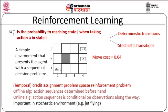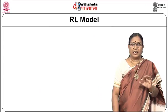The credit assignment problem is a sparse reinforcement problem. In an offline algorithm, action sequences are determined beforehand. In an online algorithm, the action sequence is conditional on the observations seen along the way — it is a dynamic problem. This is especially important in a stochastic environment where we do not know whether we will actually reach the intended state after taking action a from state i.